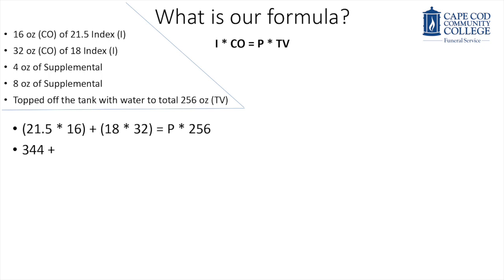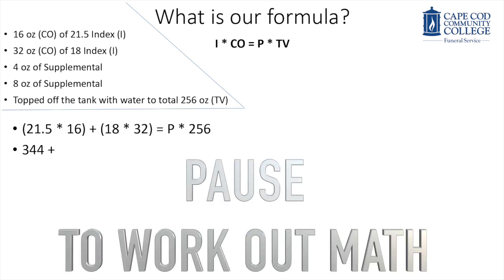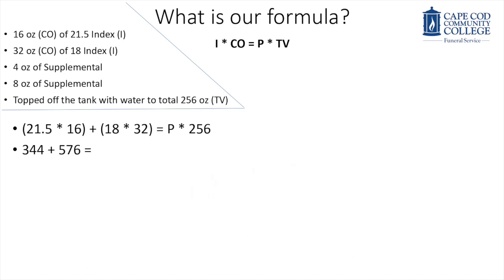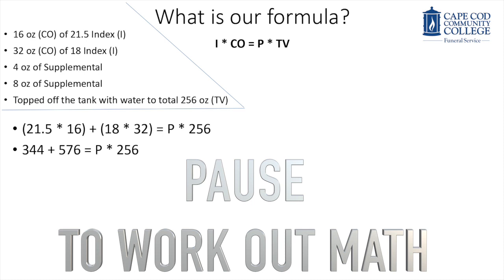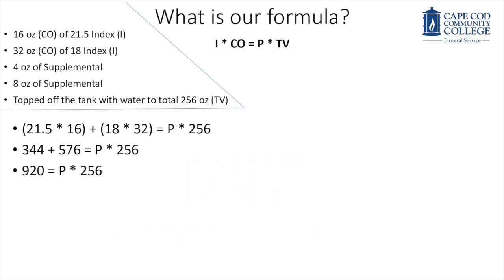Let's start by working out our equation. So 21.5 multiplied by 16 is 344. Now pause this video so you can work out what 18 times 32 is. Hopefully you got 576 as an answer. For the next step, you're going to want to add together 344 and 576 to combine the two chemicals. Hopefully you got 920 as an answer.